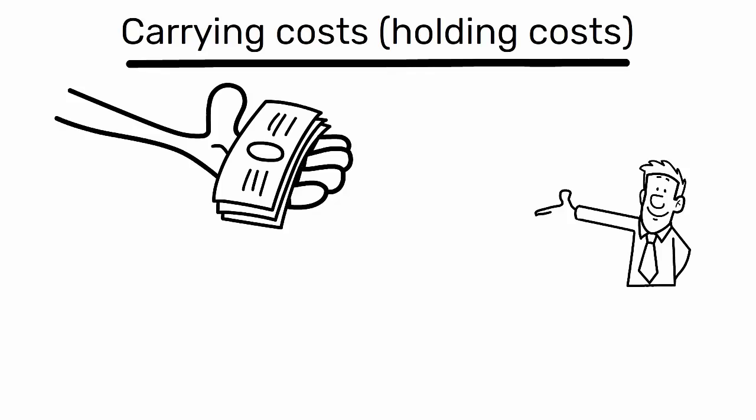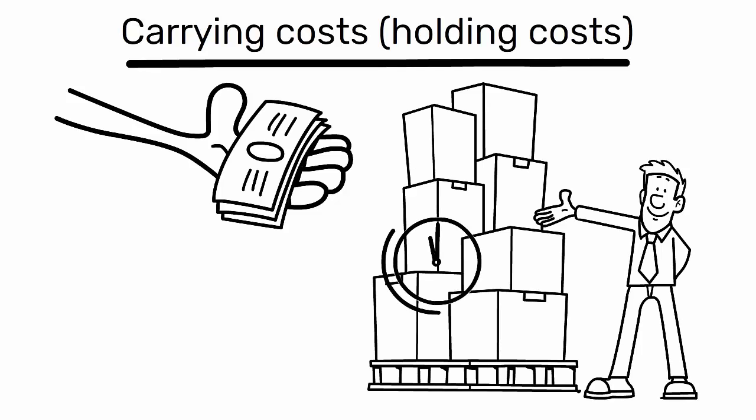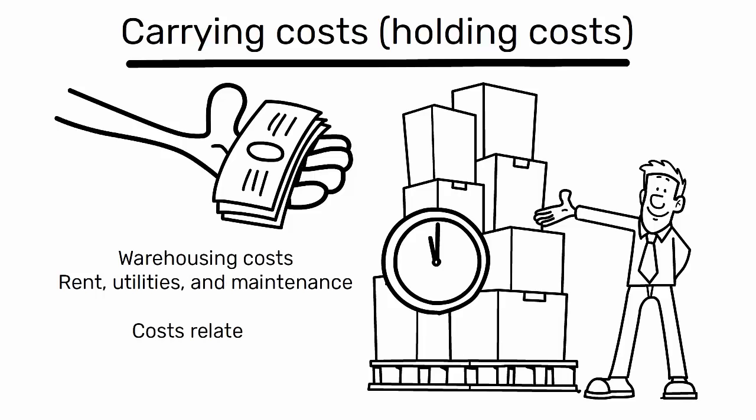are the costs associated with storing inventory over a certain period. These include warehousing costs such as rent, utilities, and maintenance, as well as costs related to inventory depreciation, obsolescence, and insurance.